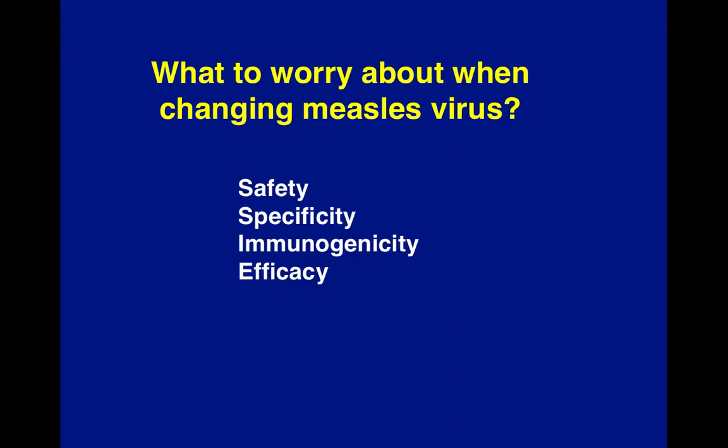There are four things to worry about when changing the measles virus: safety, specificity, immunogenicity, and efficacy. Safety means you don't want to cause any damage. Specificity means targeting a particular tissue. Immunogenicity means getting the right level of immune reaction — you don't want to cause a cytokine storm by being too immunogenic, meaning an over-response, but you also don't want the immune system completely silent. If using it as a gene therapy vector, you'd want no immunogenicity so the immune system doesn't stop it. Efficacy is how effective it is at oncolysis or delivering a gene.